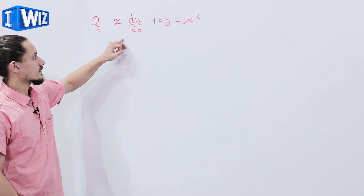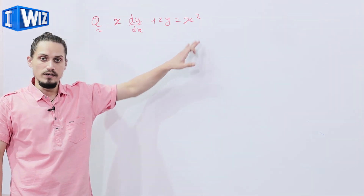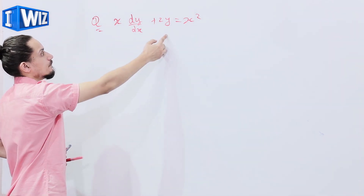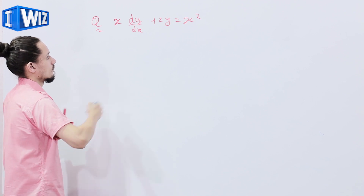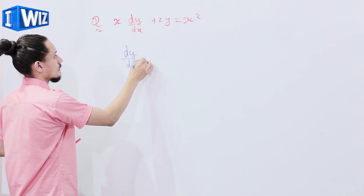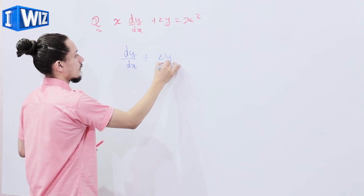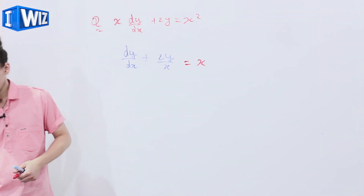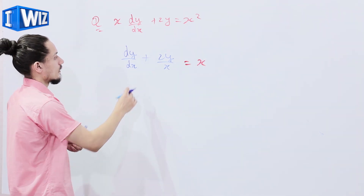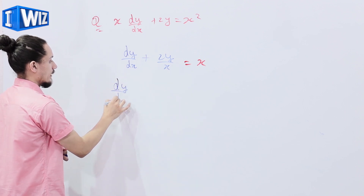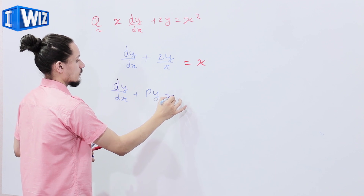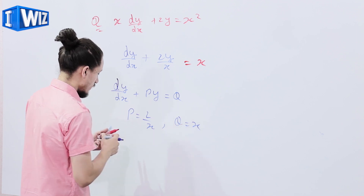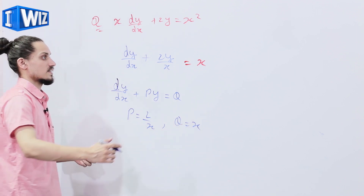The next example: x·(dy/dx) + 2y = x². We need to reduce it into the form of a linear differential equation. Dividing every term by x, we get dy/dx + 2y/x = x. Comparing with dy/dx + py = q, we get p = 2/x and q = x.